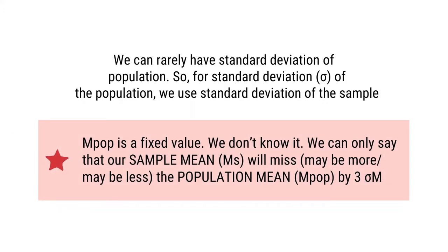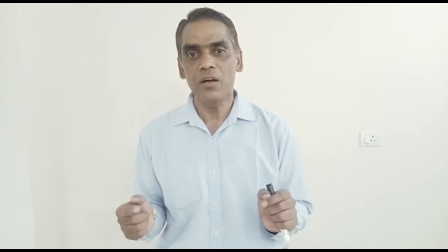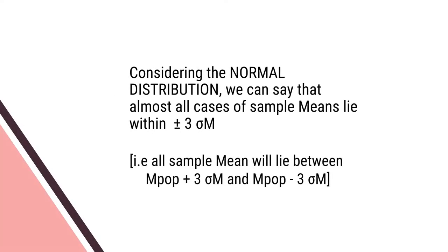We can rarely have the standard deviation of the population. In most cases, it is not available, so we generally use the standard deviation of the sample instead. The mean of the population is a fixed value — we do not know it — but we can say that a sample mean will miss the population mean by at most 3 Sigma M. Considering the normal distribution, almost all sample means will lie within the range of the population mean plus 3 Sigma M and the population mean minus 3 Sigma M. This is the limit within which the sample means are distributed.